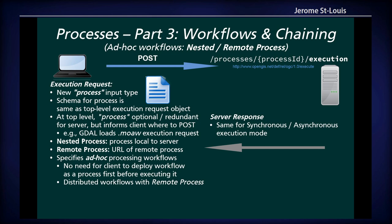The main thing I want to talk about is what Part 3 allows you to do. With Part 3, the first thing it has is the concept of an ad hoc workflow. You discover processes and data sources available here on the client, and right away you can execute it without having to deploy anything first. In the execution request, you have a new process input type that can be an input to another process — so you can chain your processes. The process can be a local process or a process on another server.